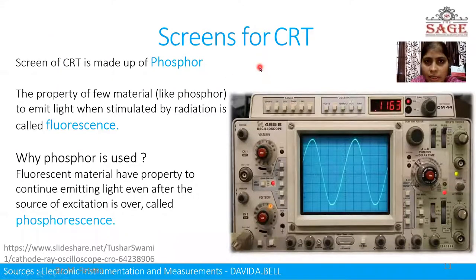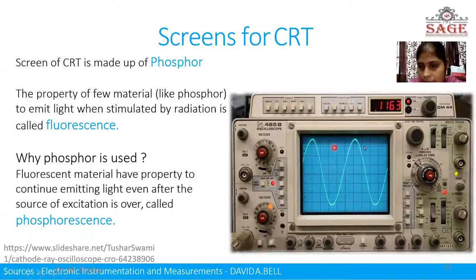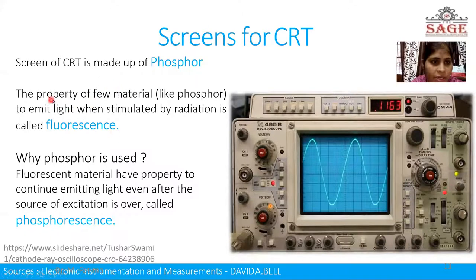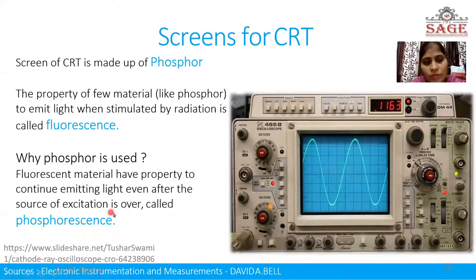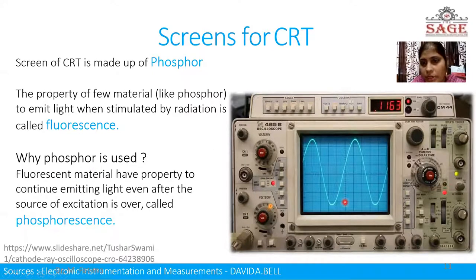The screen material for the CRT is phosphor. The phosphor is coated on the screen of the CRO. This is showing the screen on which the signal is displayed. The phosphor has the property of fluorescence — that is, the property of the material to emit light when stimulated by radiation. The fluorescent material is phosphor, and it also has the property to continue emitting light even after the source of excitation is over. This is called the phosphorescence effect. This property of phosphor is used for the screen of the CRO, so when the input is removed from the CRO, the CRO continues to display the waveform for some microseconds.